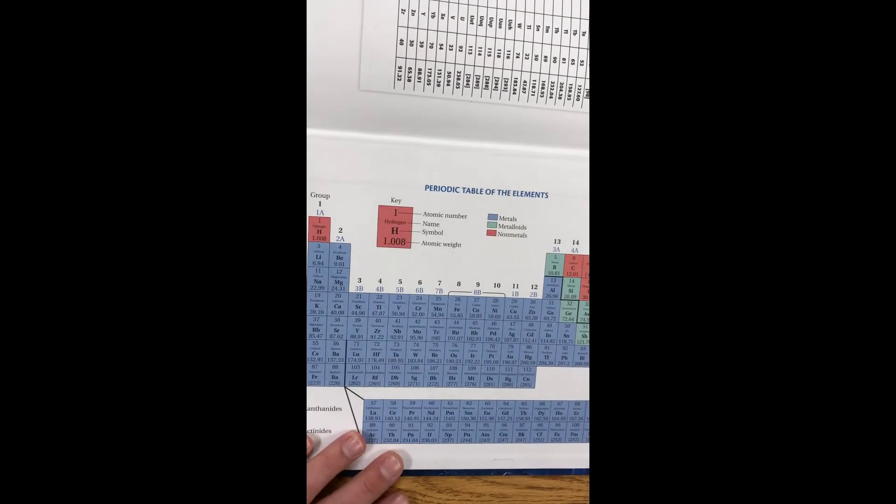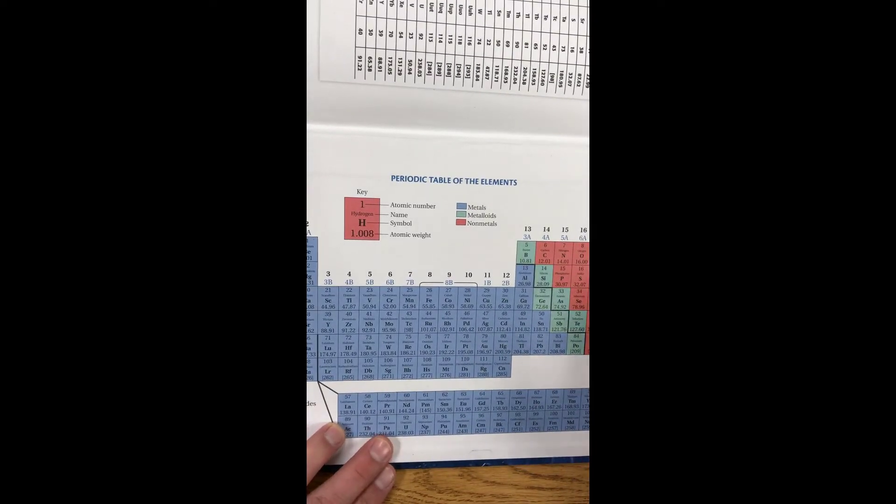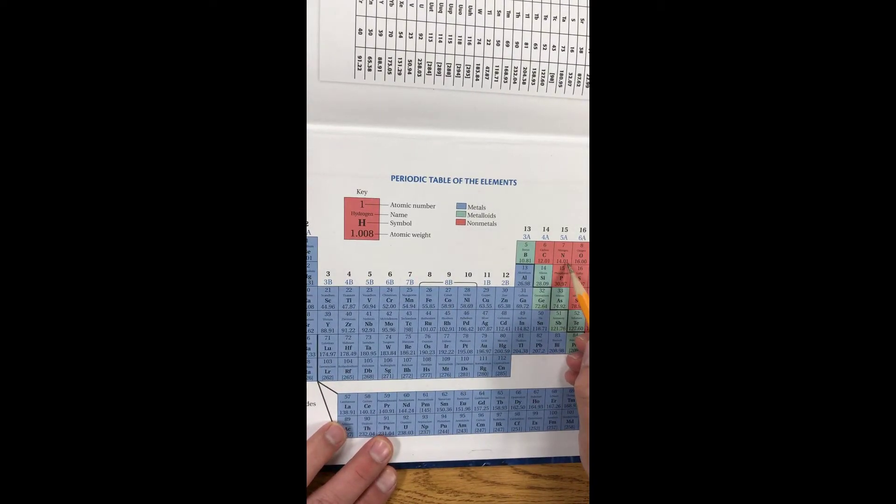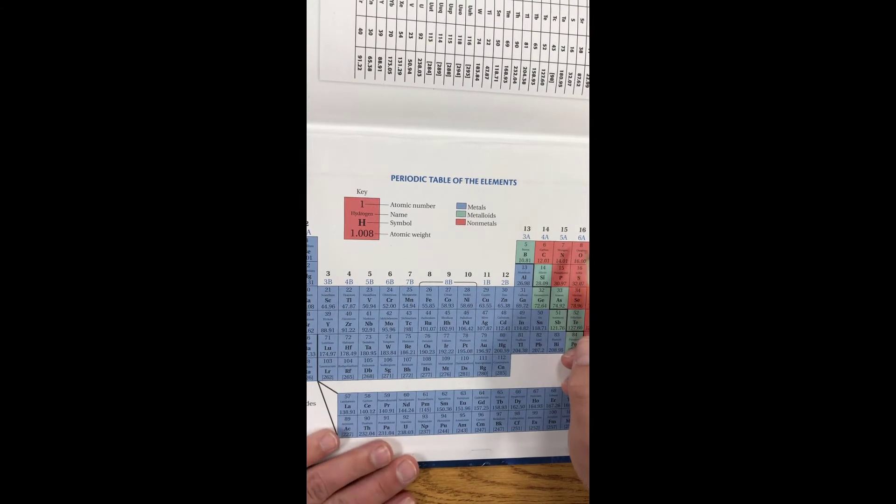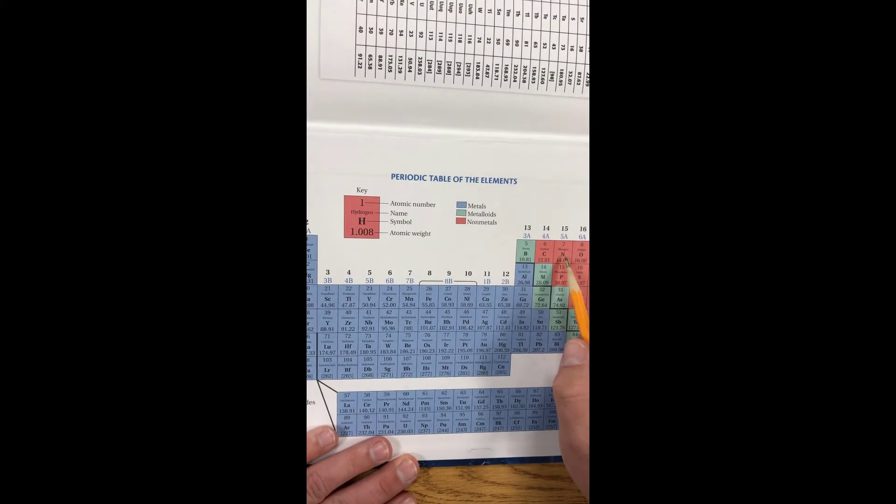In order to do this, I need to have a periodic table. So I've got my periodic table back here, and I need to find nitrogen. Nitrogen on the periodic table is right there. And you see this number down here, the atomic weight, 14.01. That's saying that one mole of nitrogen by itself, one mole of nitrogen atoms is 14.01.